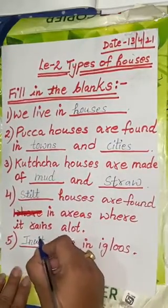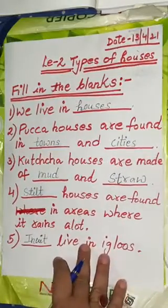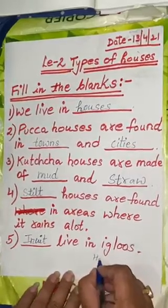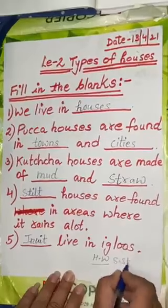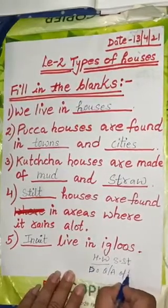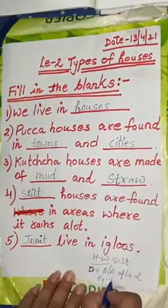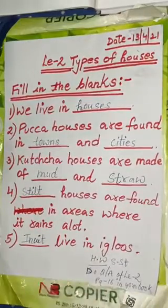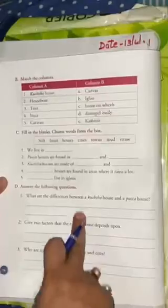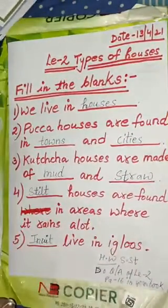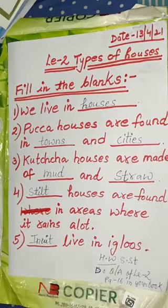So this is your exercise part one of lesson types of houses. You have to do this in your SST copy. Now for your homework: you have to do the question and answer of lesson 2, page number 16, from your book. Search the questions and answers given in your book and do this in your SST book only. Well done, thank you.